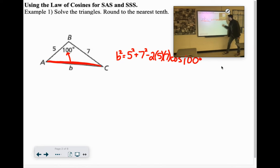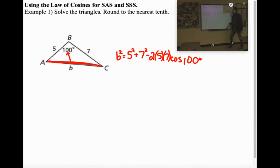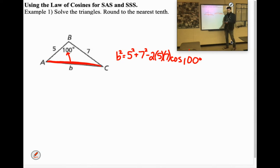Kind of in the way there. There we go. All right. Now you can do this whole right side in your calculator. Let's see. 5² + 7² - 2 × 5 × 7 × cos(100).